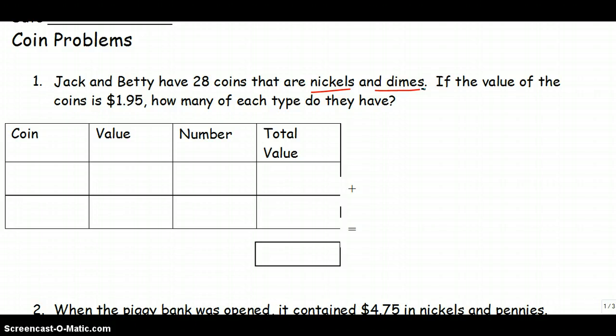So the first thing we're going to do is write down what we know. We know we have nickels, we have dimes. The value of a nickel is .05, the value of a dime is .10.